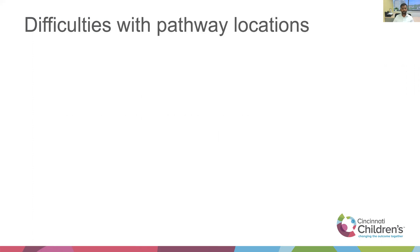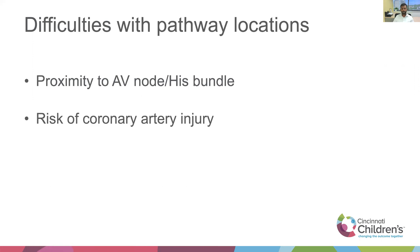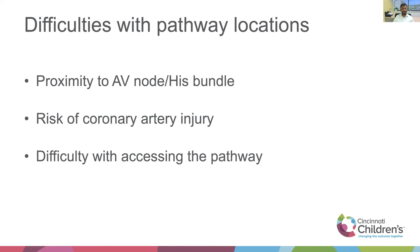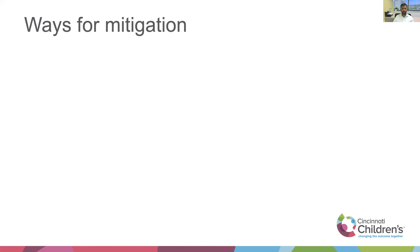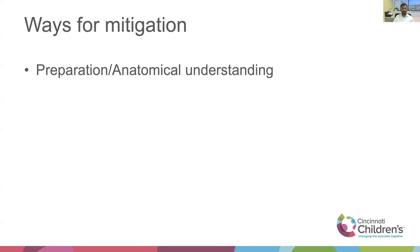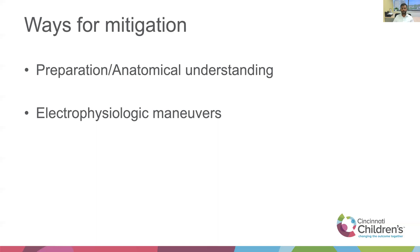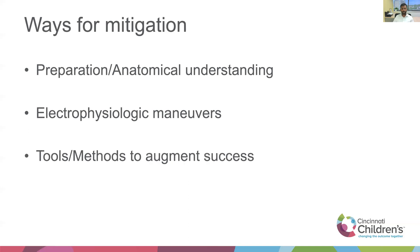So what makes a pathway difficult? To be close to the AV node, His bundle, risk of coronary artery injury, difficulty with accessing the pathway, and difficulty with stability. And how do we mitigate these difficulties? Preparations such as having good algorithmic prediction of pathway location, having a different access when needed, and good anatomical understanding of the area. Electrophysiologic maneuvers can help in siting and appropriate ablation. What is EP without its tools, and how can you use them to augment success?